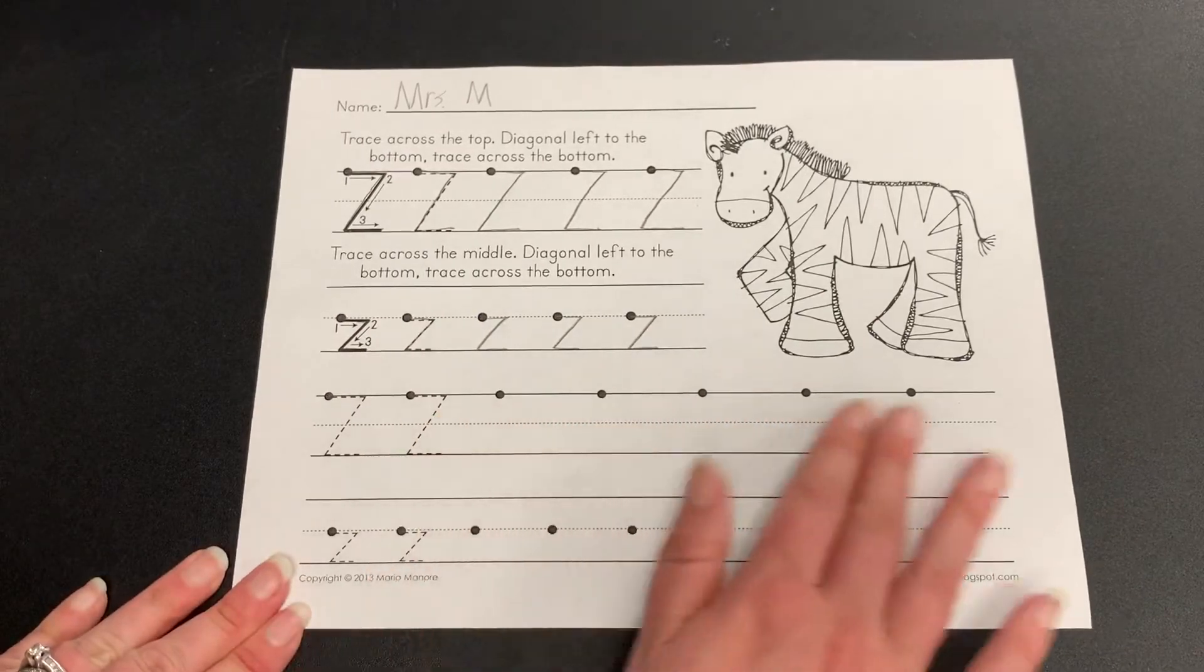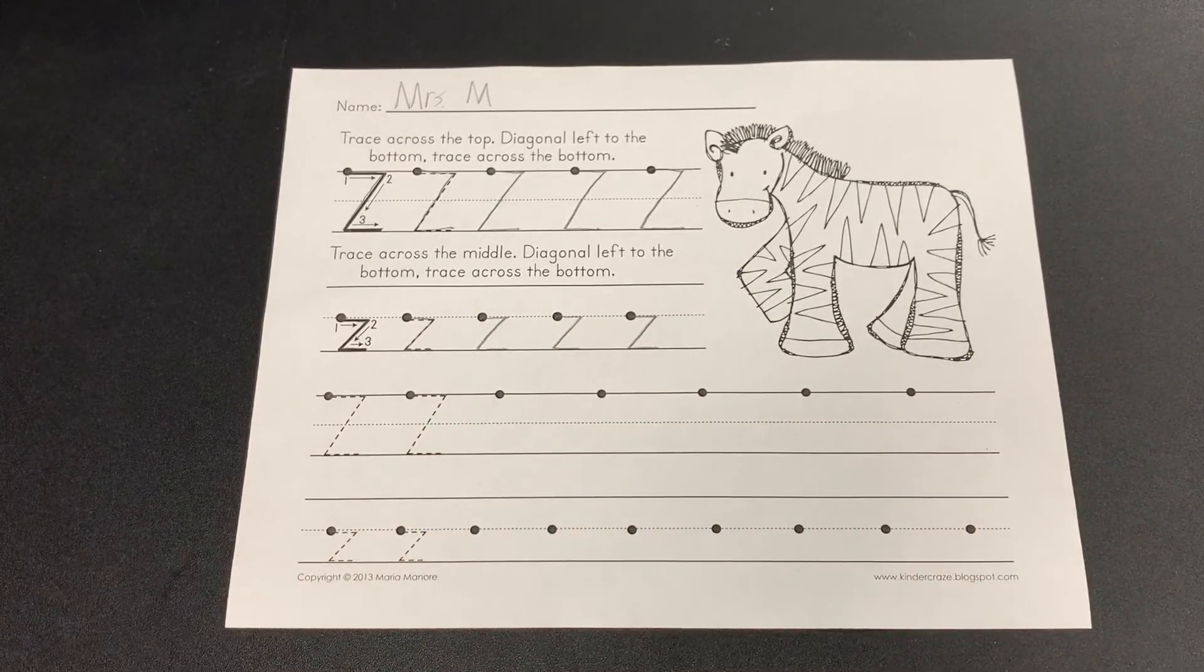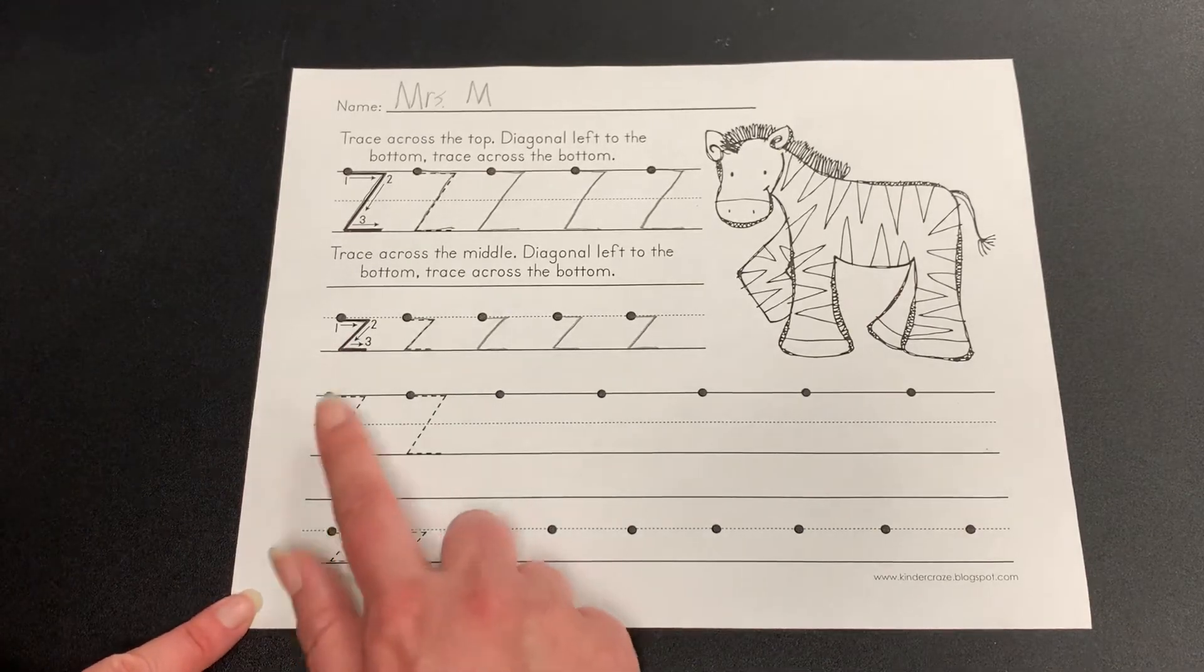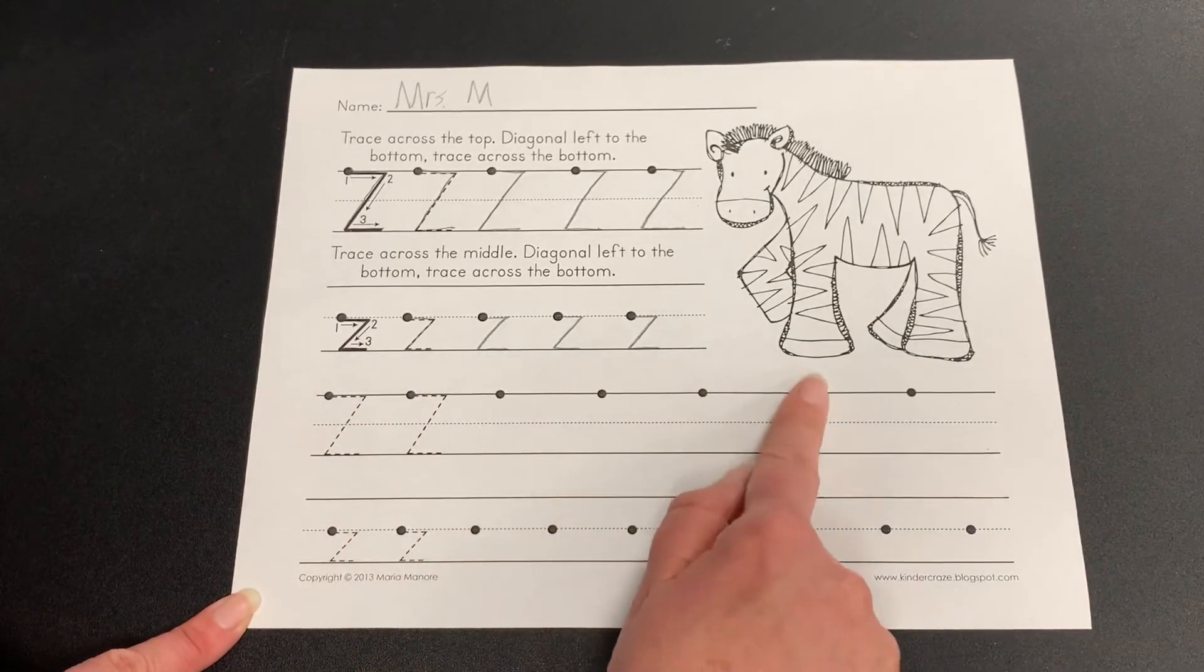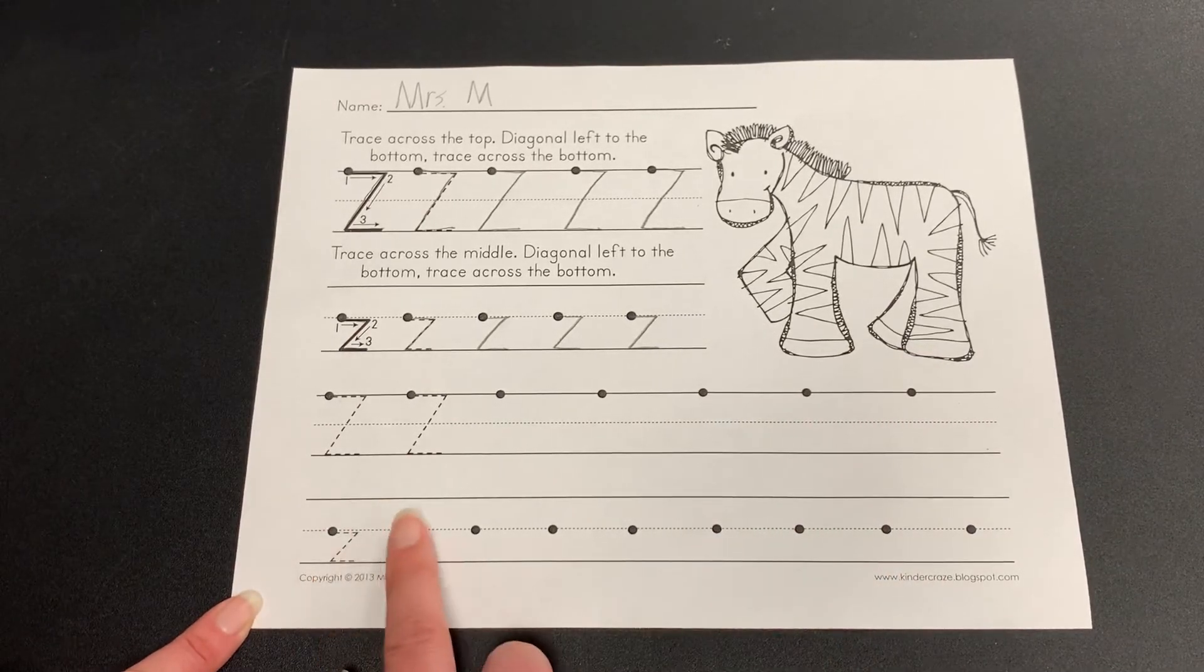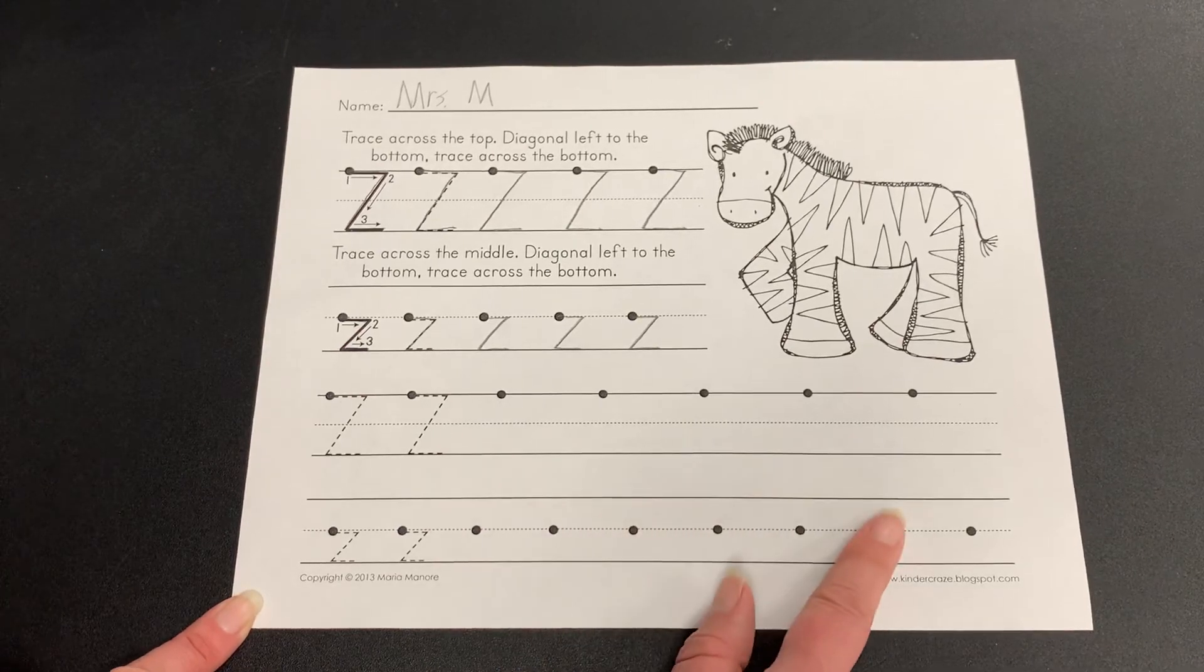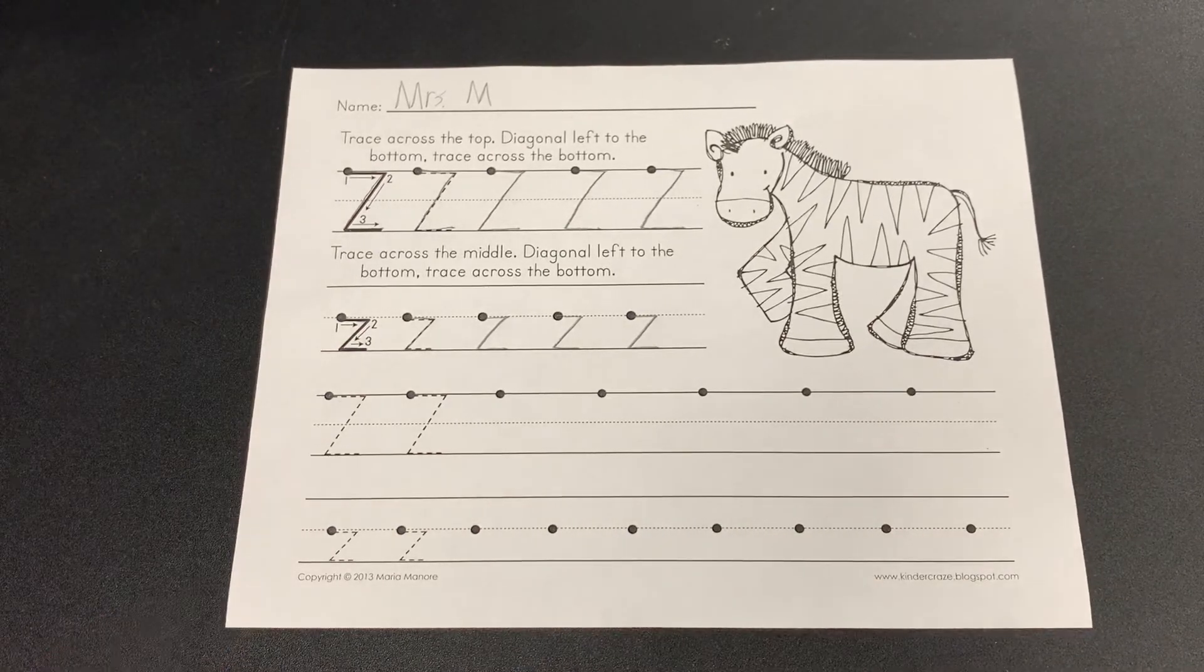Now on this bottom row down here you get to make all your own letter Z's. So one, two, three, four, five, six, seven capital letter Z's. And one, two, three, four, five, six, seven, eight, nine lowercase letter Z's.